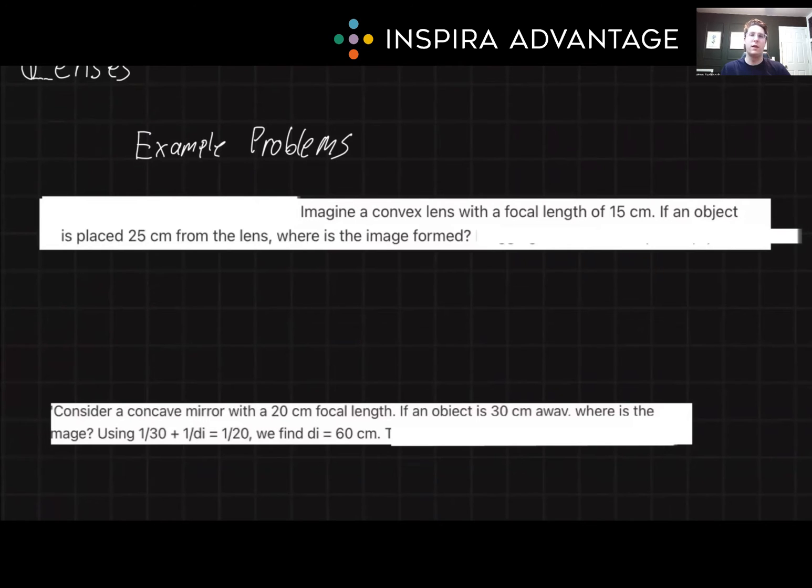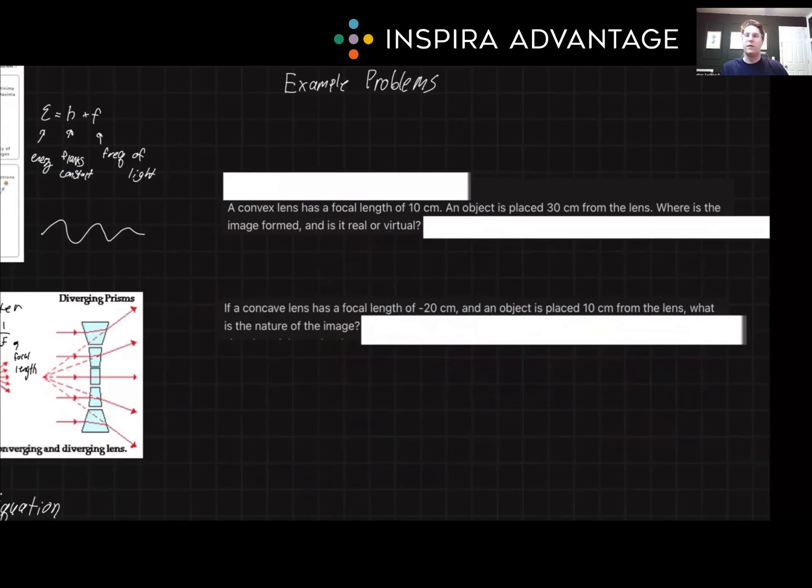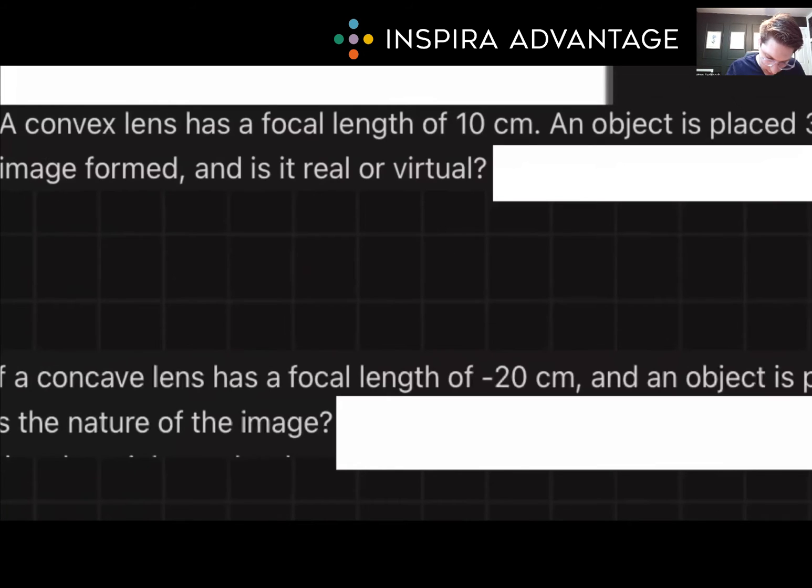But now I'm going to make you do a little bit of practice here. A convex lens has a focal length of 10 centimeters. An object is placed 30 centimeters from the lens. Where is the image formed? And is it real or virtual? Take a few moments and try and draw this out. It's really helpful to draw it.